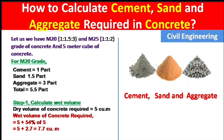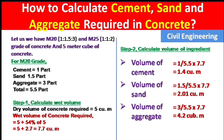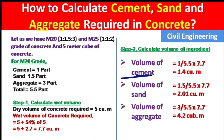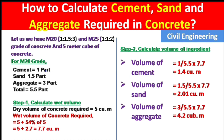So we have to add 52% to 56% of concrete to calculate the total wet volume of concrete. Now Step 2: calculate the volume of each ingredient — volume of cement, sand and aggregate. To calculate the volume of cement, we divide the part of cement by the total parts and multiply by the total wet volume of concrete. The part of cement is 1, total part is 5.5.